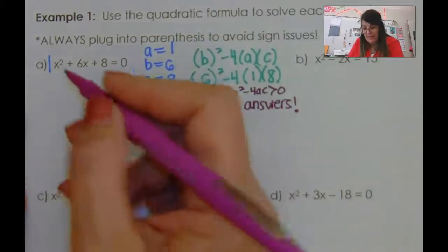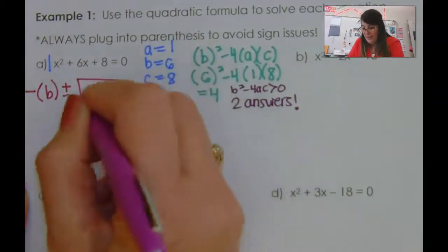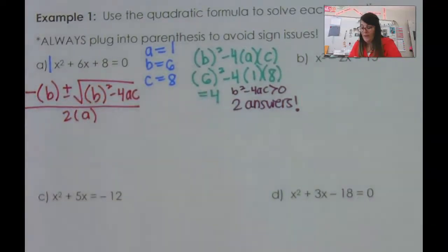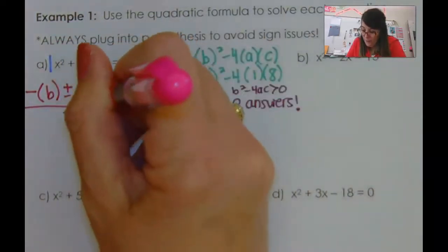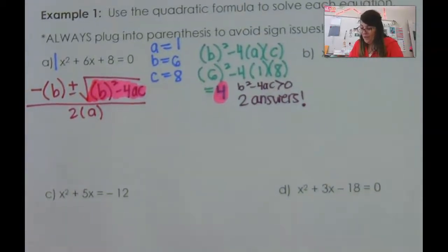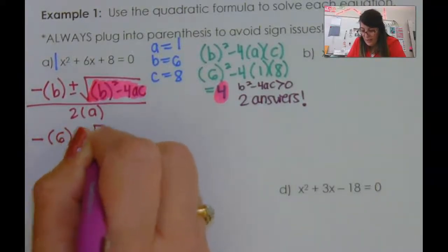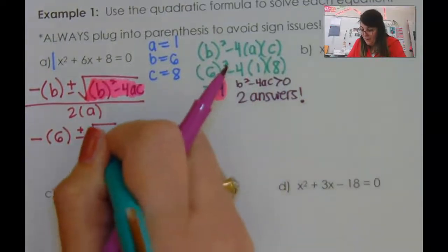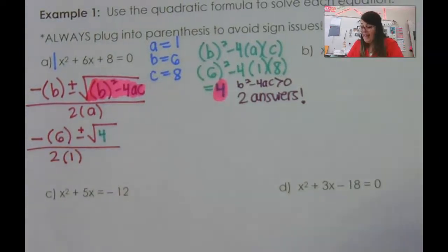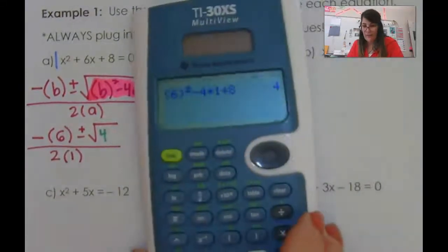Now I'm ready to plug this in. My formula goes: negative b — I like to put b in parentheses — plus or minus the square root of b squared minus 4ac, all over 2a. We just worked really hard and got 4 for the discriminant, so that's pretty easy to plug in. So it's negative 6 plus or minus the square root of 4, all over 2a. I can evaluate and simplify by hand, or I can go to my calculator.